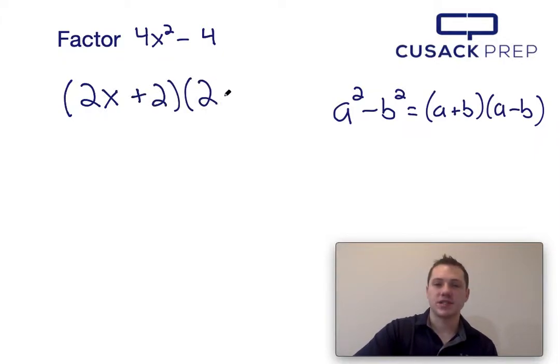And since we just do a plus b times a minus b, this factors into 2x plus 2 times 2x minus 2.